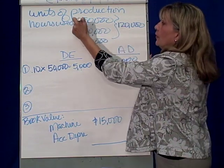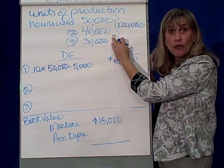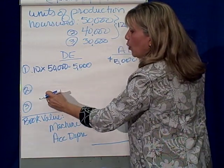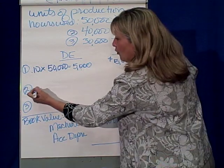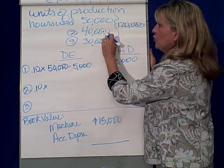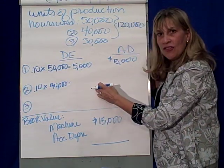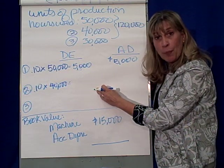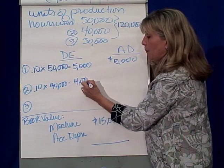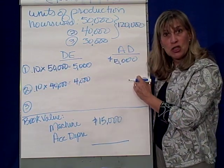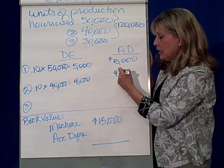In year two, we're going to be using the machine 40,000 hours. When we get around to doing the adjusting entry, it's going to be 10 cents times the actual hours — 40,000 — which means in the second year we debit depreciation expense and credit accumulated depreciation for $4,000. The balance in accumulated depreciation at the end of year two is 5 plus 4, or $9,000.